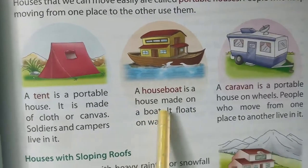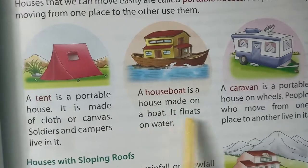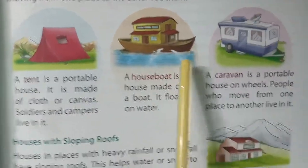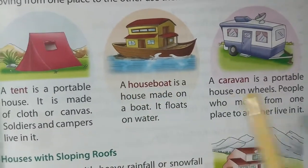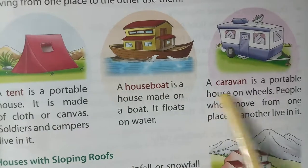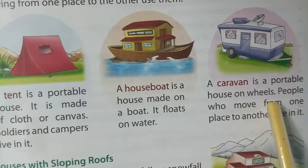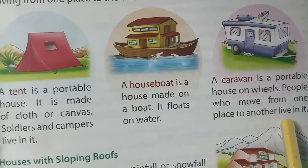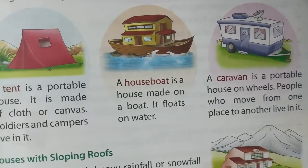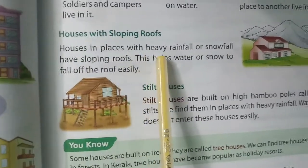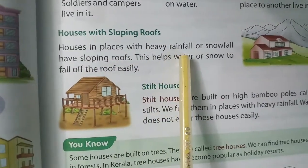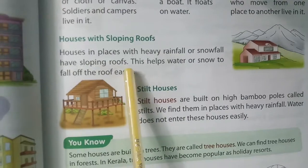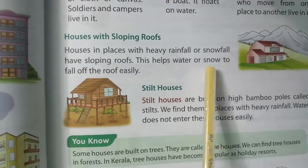A houseboat is a house made on a boat. It floats on water — you can see them in Kerala. A caravan is a portable house on wheels. People who move from one place to another live in it.